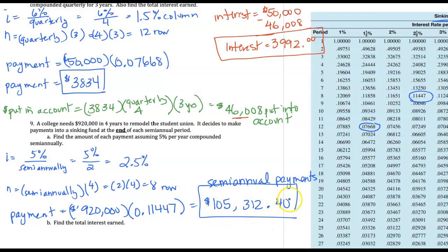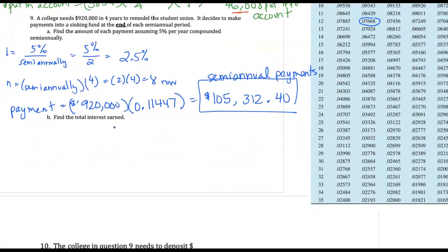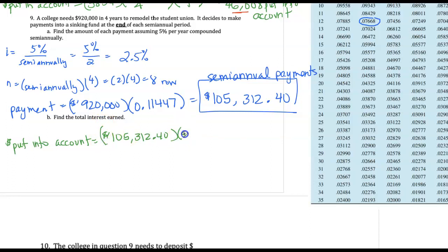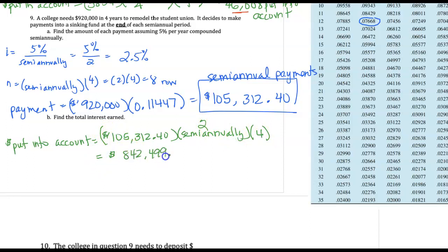If the college makes these semi-annual payments two times a year, their money will accumulate to nine hundred twenty thousand dollars in four years. To calculate the interest earned, we first find how much money was put into the account. We take that repeated payment of one hundred five thousand three hundred twelve dollars and forty cents, happening semi-annually — twice a year for four years. Multiplying the payment times two times four, we get a total of eight hundred forty-two thousand four hundred ninety-nine dollars and twenty cents put into the account.